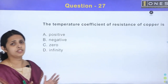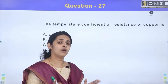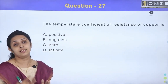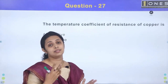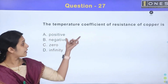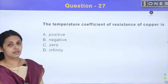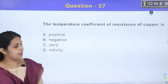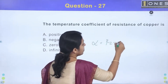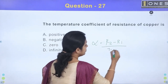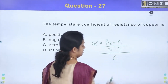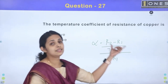What is the temperature coefficient of resistance? It is an index representing resistance change with temperature change. The expression is defined as the change in resistance per kelvin, divided by the resistance at the base temperature.